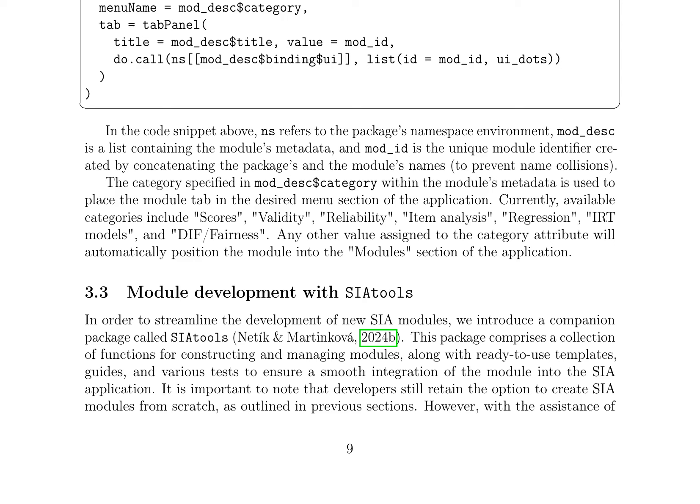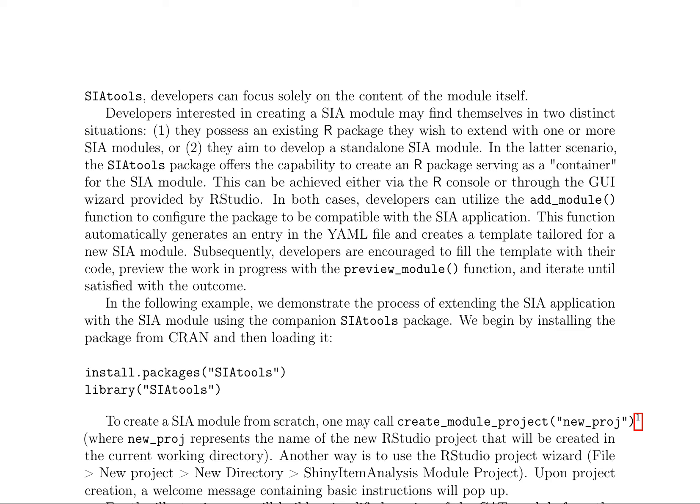This enables the module to reuse any reactive object present in the parent application. The UI of the module function is called in a similar fashion, but inside Shiny's appendTab function that appends a new entry to the correct menu. The category specified in mod_desk$category within the module's metadata is used to place the module tab in the desired menu section of the application. Currently available categories include scores, validity, reliability, item analysis, regression, IRT models, and DIF fairness.